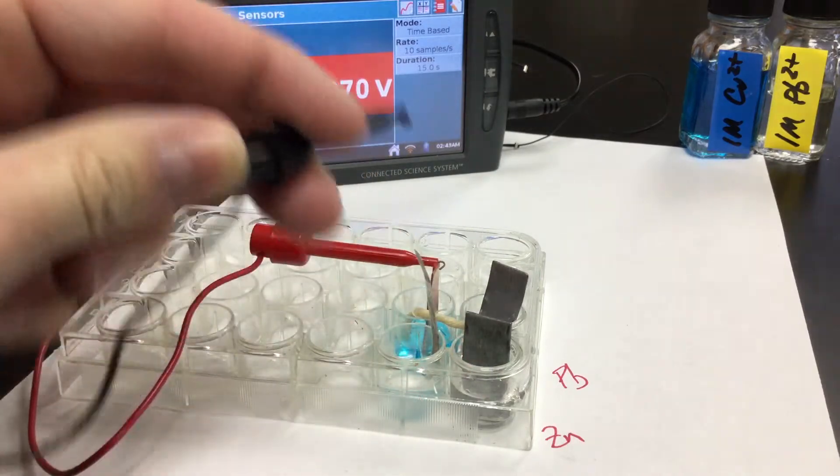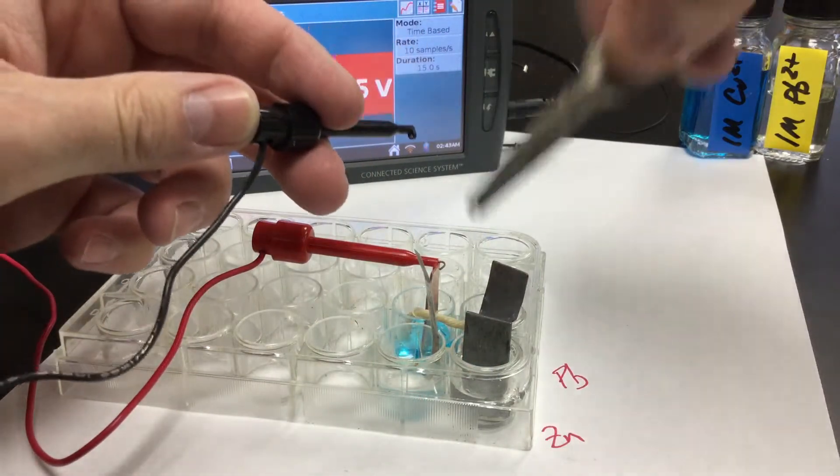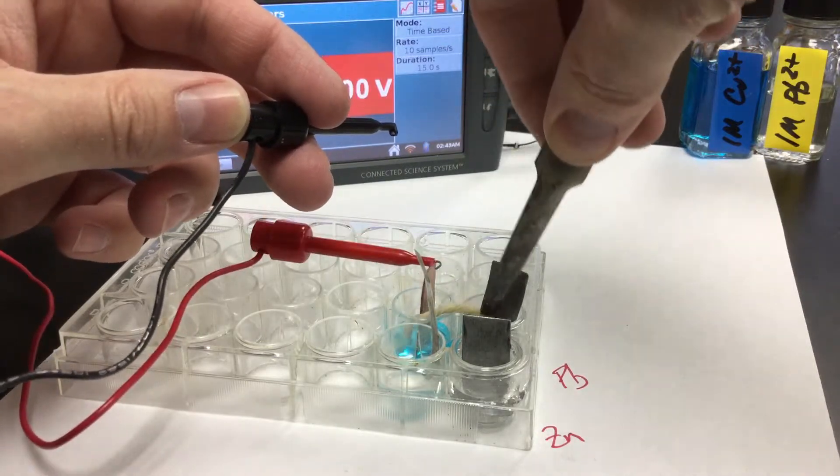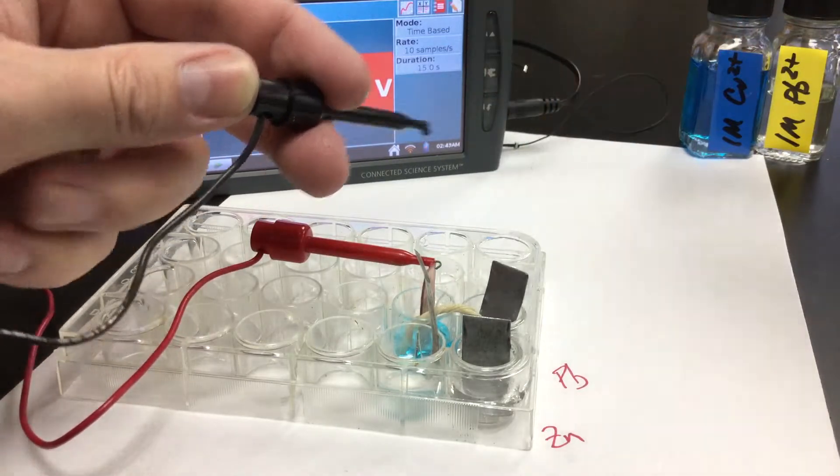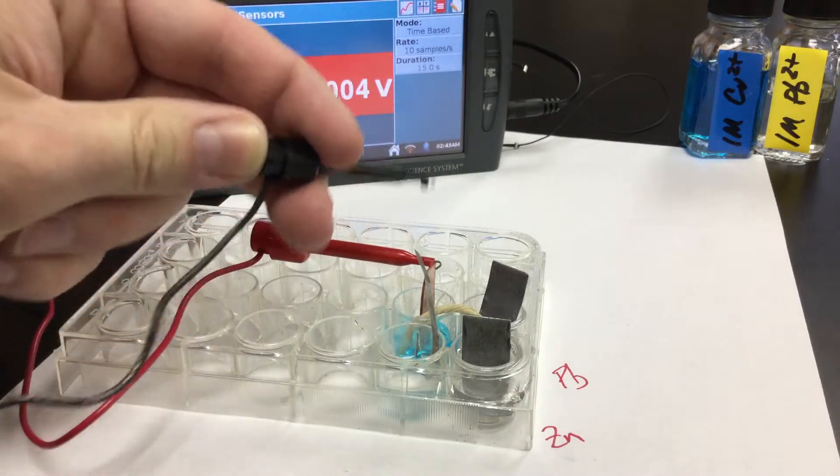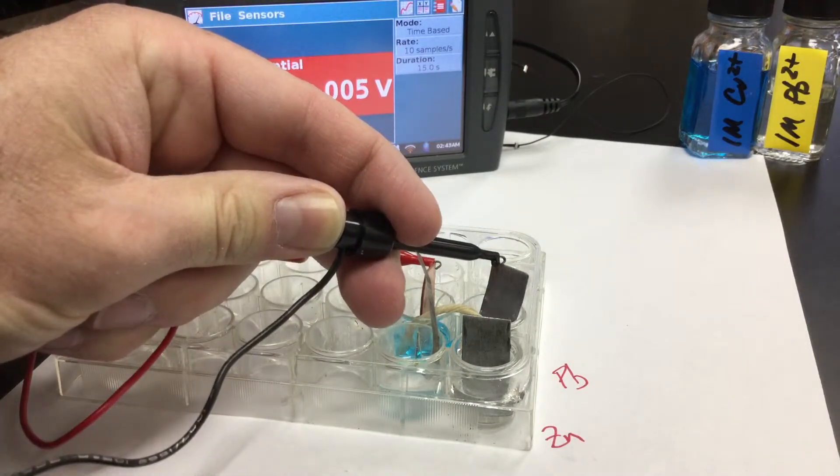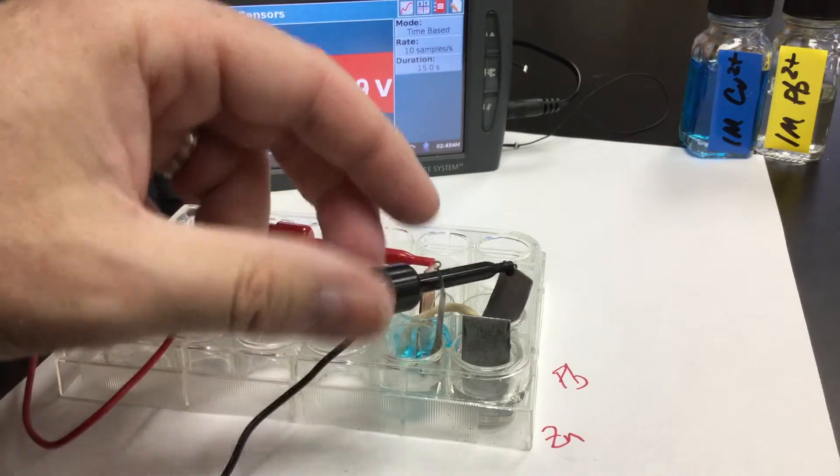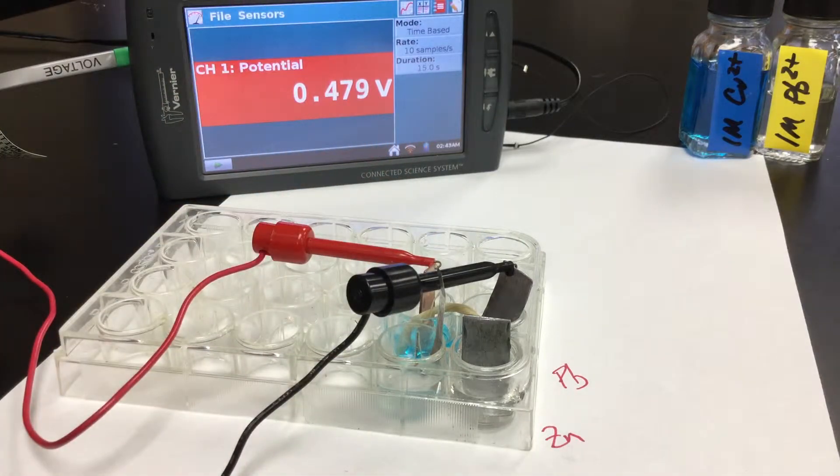And then we're going to do the same thing with the zinc. I'm going to transfer my salt bridge. Get that in there. And then this is going to be the copper with the lead. The lead is at the black and the black I believe is the anode. So for this one, you should get somewhere around what we're reading now, about somewhere around 0.5 volts as your voltage difference.